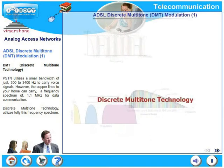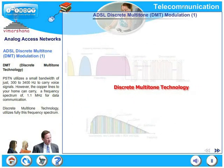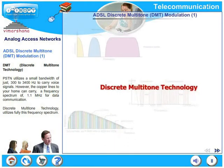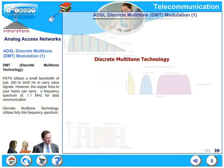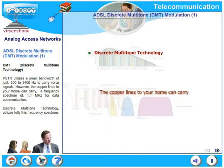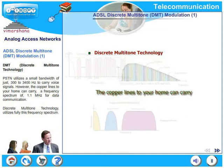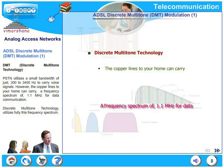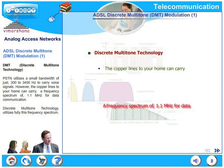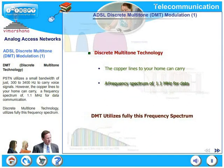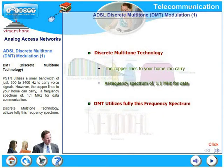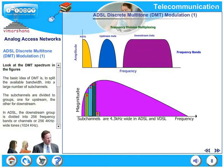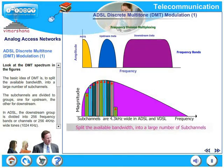In this slide, let's look at ADSL's another popular modulation technique known as DMT, discrete multi-tone modulation. PSTN utilizes a small bandwidth of just 300 to 3,400 hertz to carry voice signals. However, the copper lines to your home can carry a frequency spectrum of typically 1.1 megahertz for data communication. DMT utilizes fully this entire frequency spectrum. Look at the DMT spectrum in the figures given here.